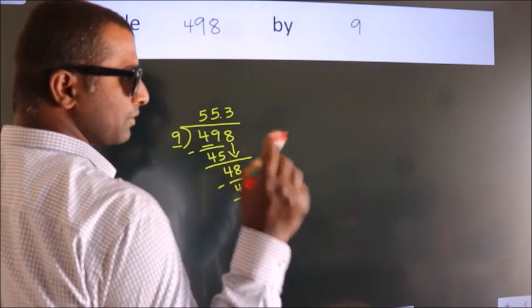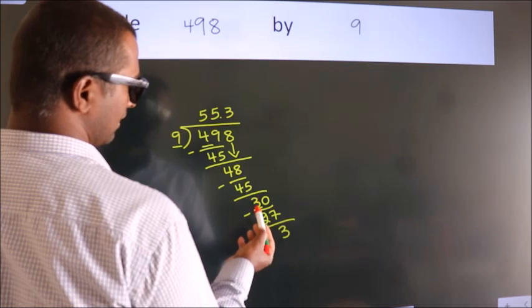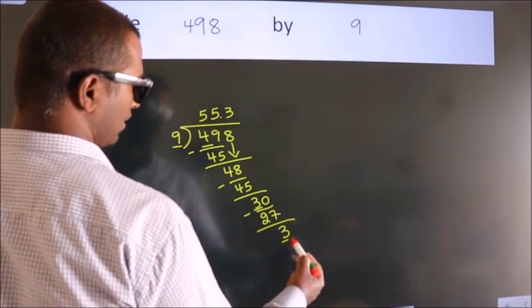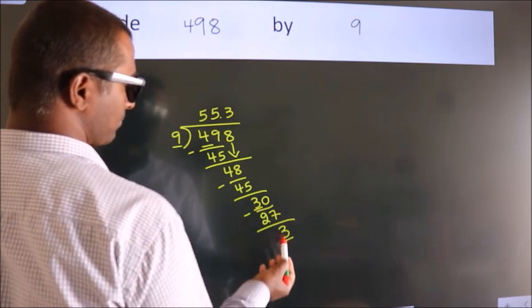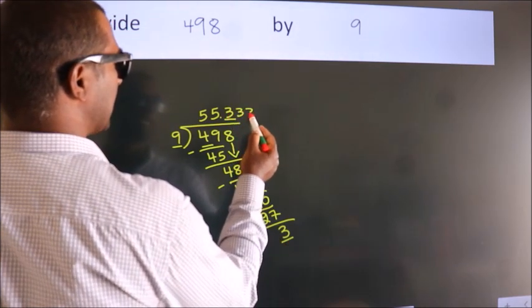Now you observe. Here we had 3, and we got 3 again. That means this number keeps on repeating. So this is our quotient.